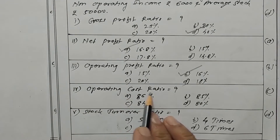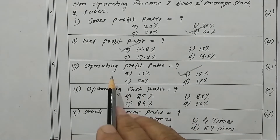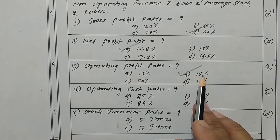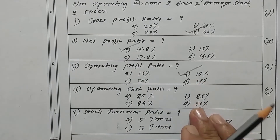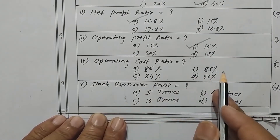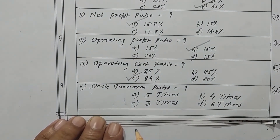What is the operating cost ratio? Since operating profit ratio is 16 percent, the operating cost ratio is 100 minus 16, which equals 84 percent. Option C is the correct one.